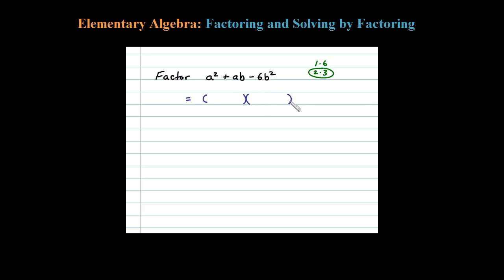We always start factoring with two blank parentheses. First term first: a squared breaks up as a times a. For the last term, we already put some thought into that — we're going to use 2 and 3 for the 6, so let's use 2b times 3b. Order doesn't really matter here.